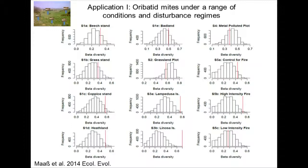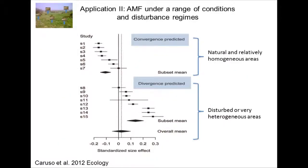The same exercise on a community of arbuscular mycorrhizal fungi under a range of conditions and disturbance regimes — here I show the results in the form of a meta-analysis, with the black vertical line being the neutral prediction for beta diversity and the real data shown alongside. When we have natural and relatively homogeneous areas, we observe that real communities have beta diversity significantly lower than what is expected under neutrality. When we have heterogeneity and disturbance, we have very high beta diversity with respect to the neutral model. But in many cases we also have communities consistent with the neutral model expectation.